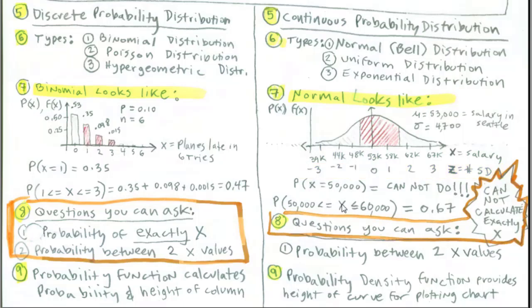So if we want to calculate the probability of exactly $50,000 job, we can't do it. Now, the reason comes from the fact that a line or an exact point has no area. So this particular model is not going to allow us to calculate an exact probability.